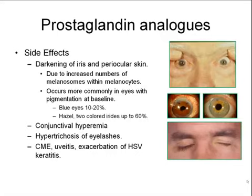The side effects of all the prostaglandin analogs are generally similar. You can get darkening of the periocular skin. This is due to increased numbers of melanosomes within the melanocytes — not due to an increase in the numbers of melanocytes, but an increase in the number of melanosomes. It occurs more commonly in eyes with some pigmentation at baseline. If you have some pigment like hazel or green-colored eyes, you can have this increased pigmentation in up to 60% of cases. In blue eyes, it's probably 10% to 20%.